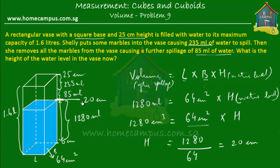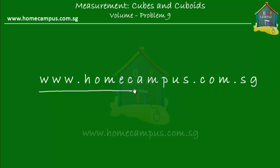After the two spillages, the water level reduced from 25 centimeters to 20 centimeters. When solving problems related to volume of water, remember: Volume = Length × Breadth × Height. When the volume of water in a container changes, it's really only the height of the water level that changes, because the length and breadth stay constant. Please go and practice at www.homecampus.com.sg, where there are also several tests you can take. This is Em signing off — bye!